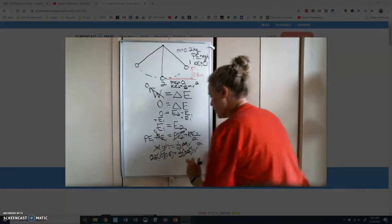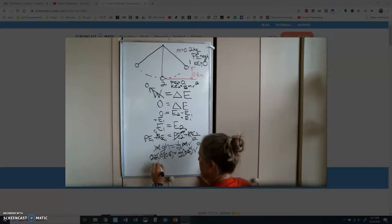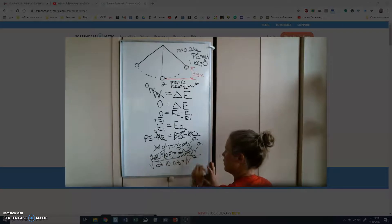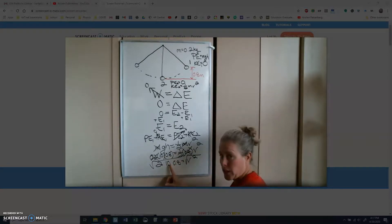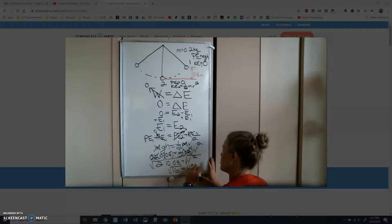So my speed is going to be 2 times 10 times 0.8 equals v squared. So I take the square root of that now. 0.8 times 10 is 8, times 2 is 16. The square root of 16 is equal to 4 meters per second.